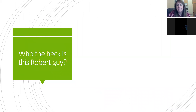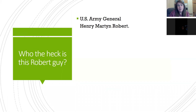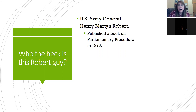So let's talk about who the heck is this Robert guy. Robert was a U.S. Army General — his name was Henry Martin Robert — and he worked to create a book about parliamentary procedure, published in 1876.